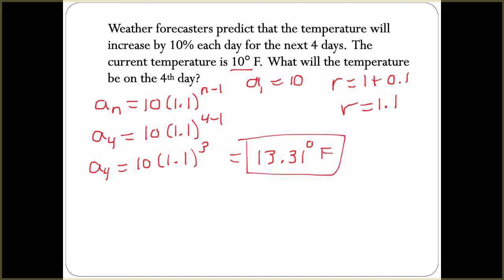That's the temperature on the fourth day. This is how we link exponential functions and geometric sequences. Geometric sequences are basically just exponential functions, except we can only go by increments of one.